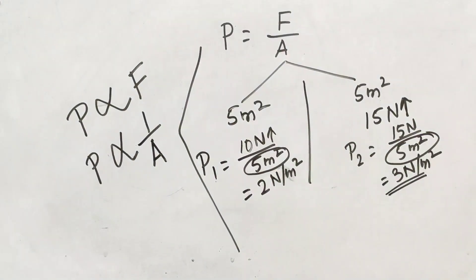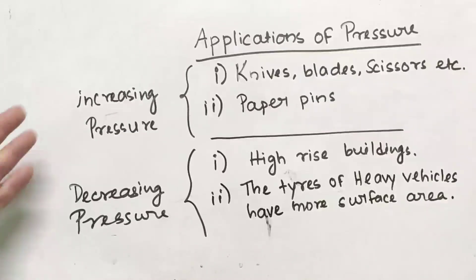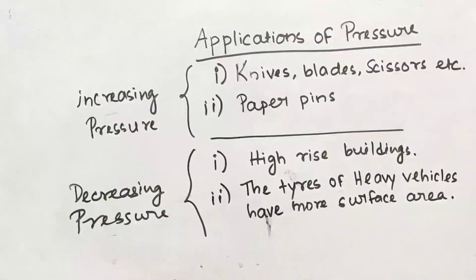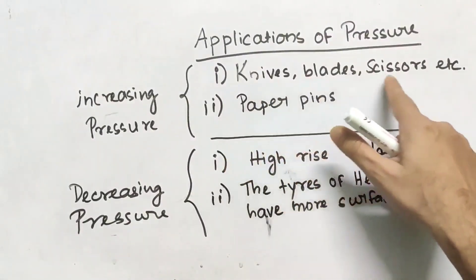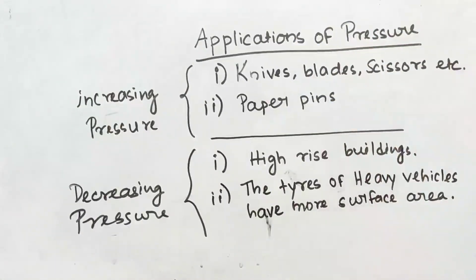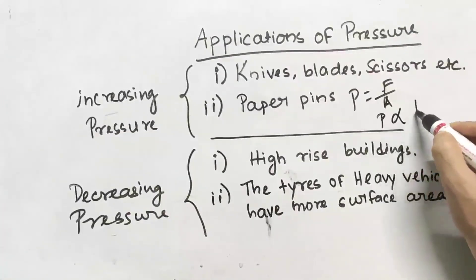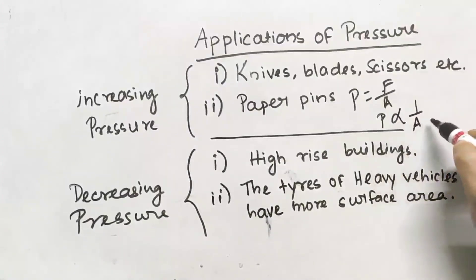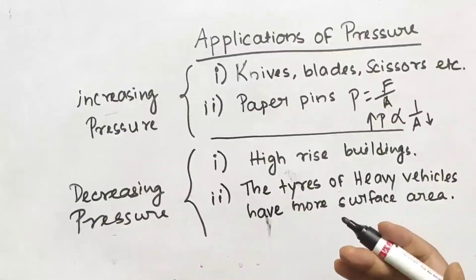I hope you are liking the session. Now let's talk about the applications of pressure. Pressure needs to be either increased or decreased. When we need to cut something, we use knives, blades, and scissors — all of which have less surface area. Since P is inversely proportional to area, when area is less, pressure increases, and you can cut things easily.